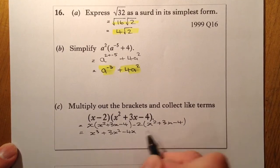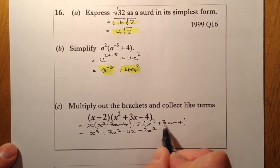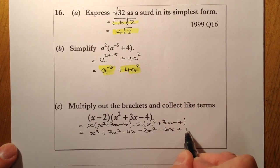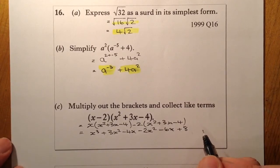I've now got minus 2 times x squared, so that's minus 2x squared. Minus 2 times 3x will give me minus 6x, and minus 2 times a minus 4 will give me a plus 8 towards the end there.